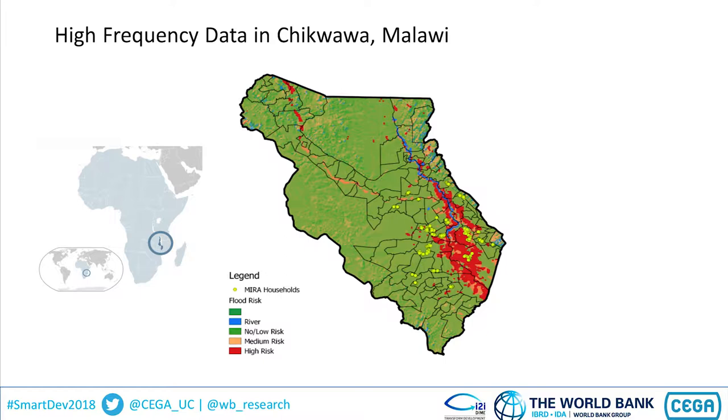This was followed by drought driven by El Niño oscillation in 2017, and then most recently a large upsurge in fall armyworm, which is an agricultural pest that's devastating corn crops there.